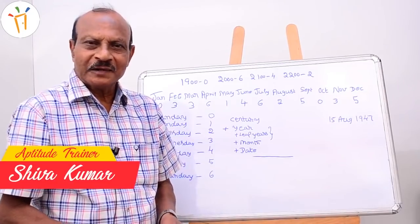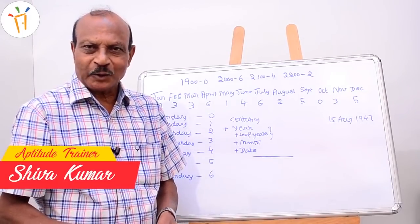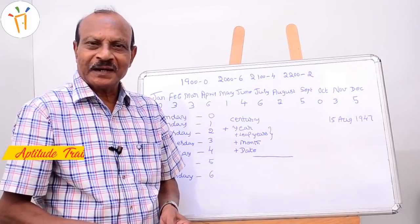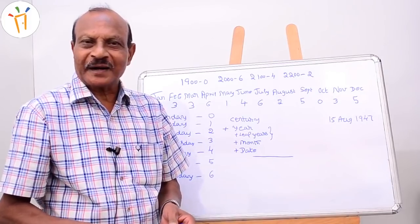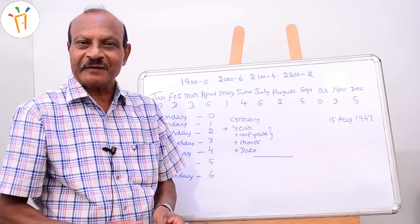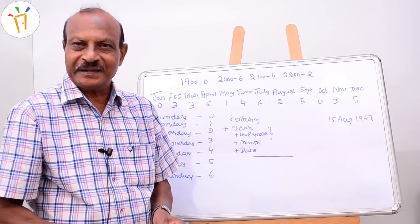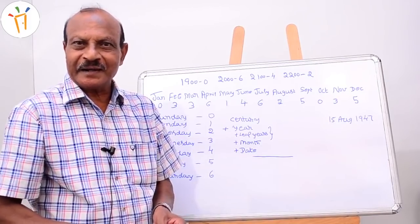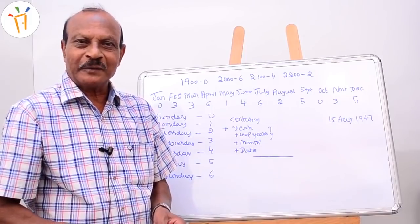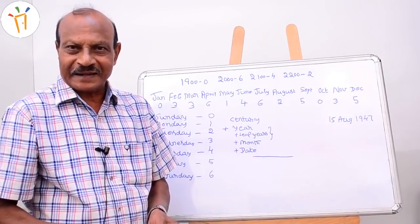I am Shokumar from Tumkur, which is 80 kilometers from Bangalore. I am a retired employee of State Bank of Mysore and I am a world record holder in calendar. I have prepared a calendar from zero to infinity in a single page, and it is a world record. Today I have come over to freshersworld.com to give some information about calendars.